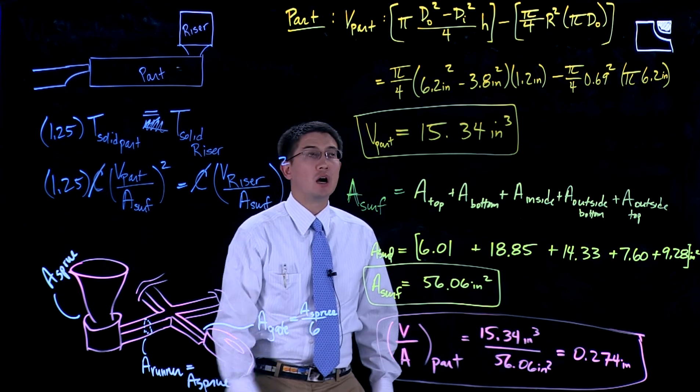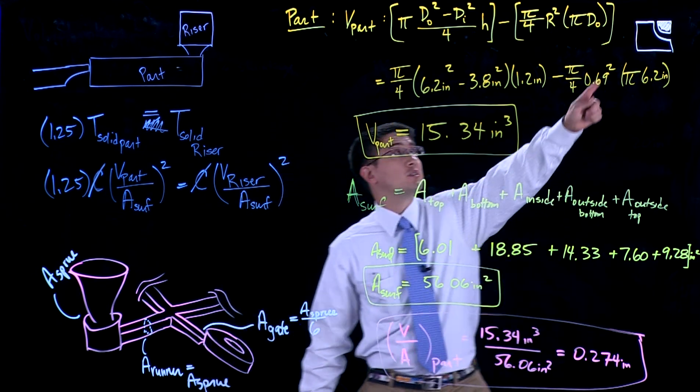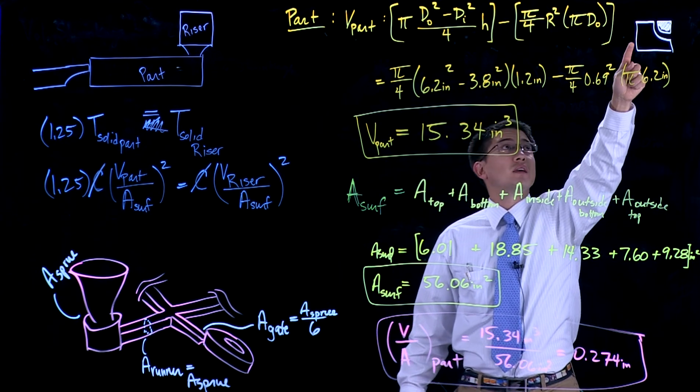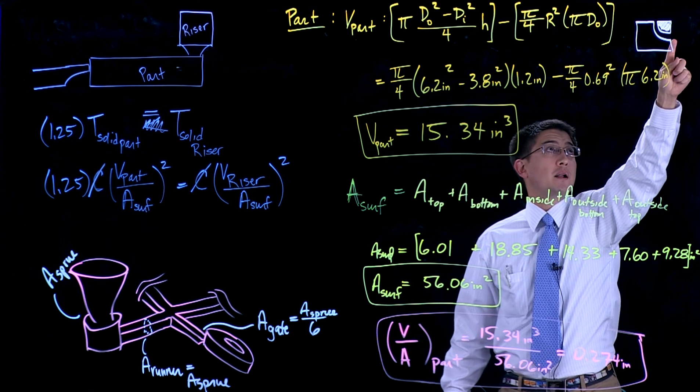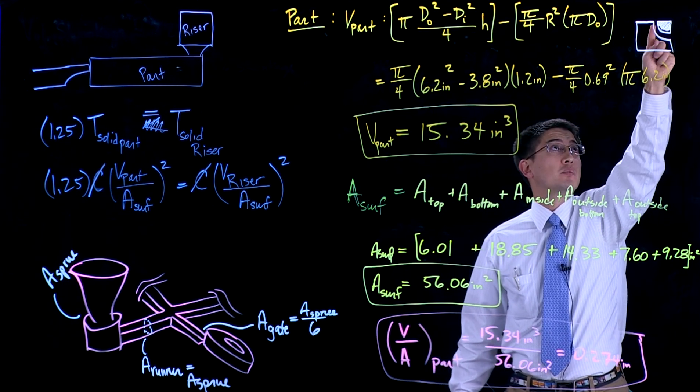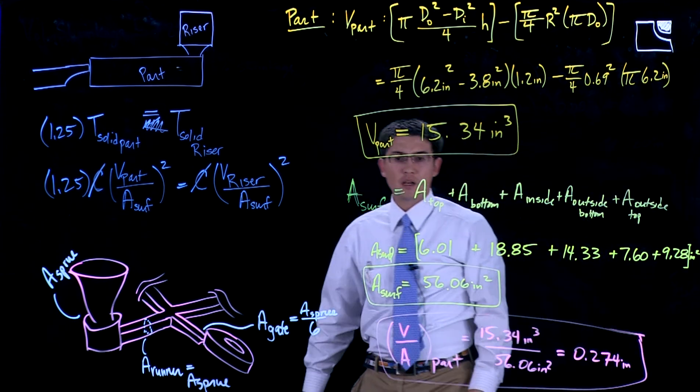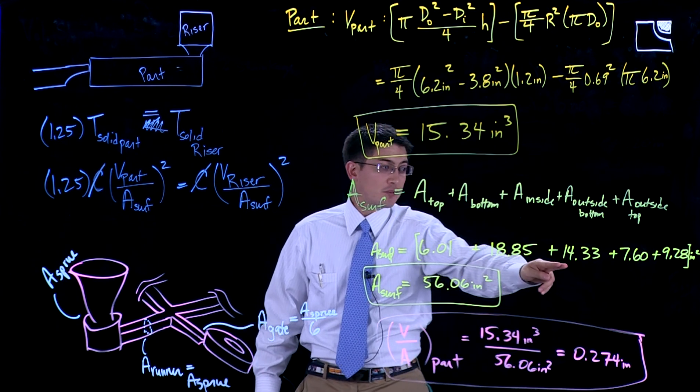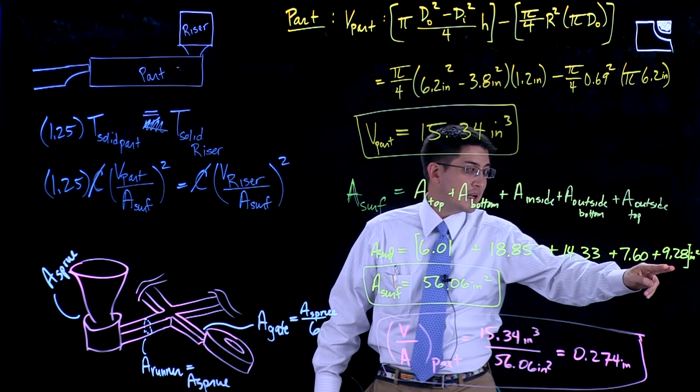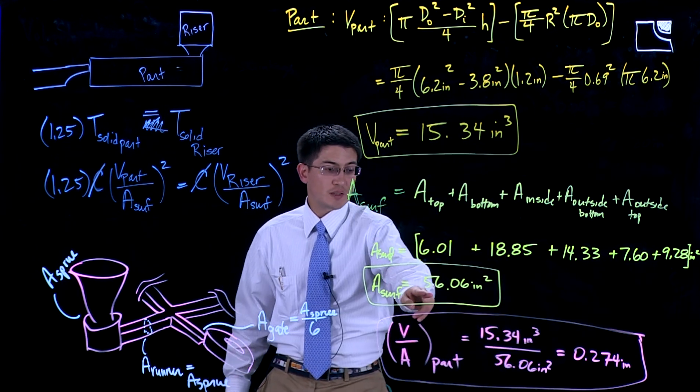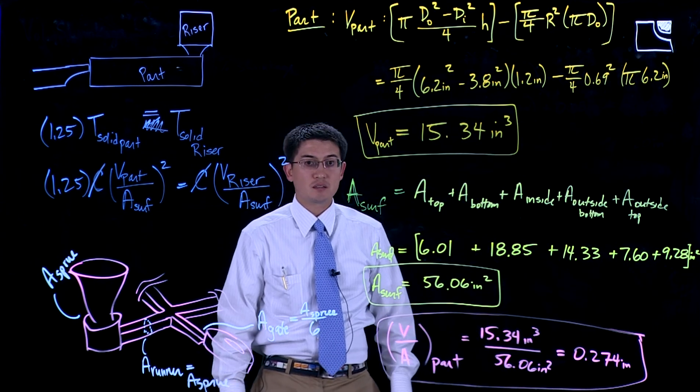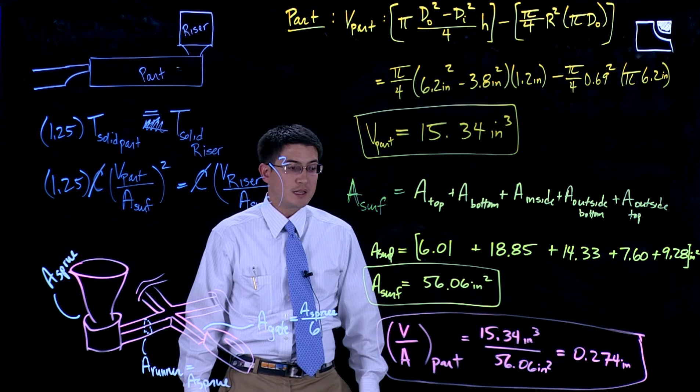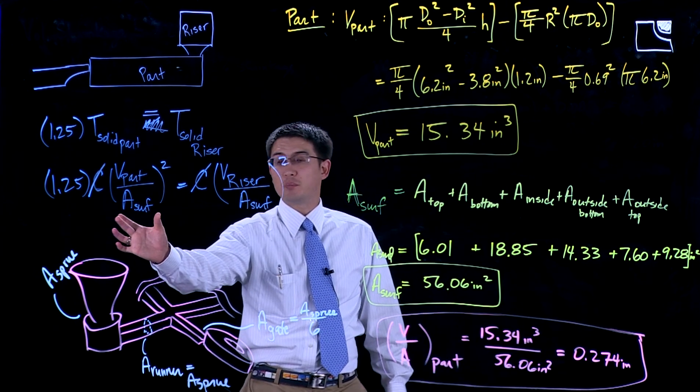Now we need to calculate the surface area of that part. We've broken that down into a couple of different parts. We have the surface area of the top, surface area of the bottom. And now remember this whole thing is revolved. The surface area of the inside, surface area of the outside bottom, as well as the surface area of the outside top, which is going to be this round part here. If you work each one of those out, those will be 6.01 square inches, 18.85, 14.33, 7.6, and 9.28 square inches. So the total surface area of this part here is 56.06 square inches. So now the ratio of the volume to the surface area of our part is 0.274 inches. This is essentially this part right here.